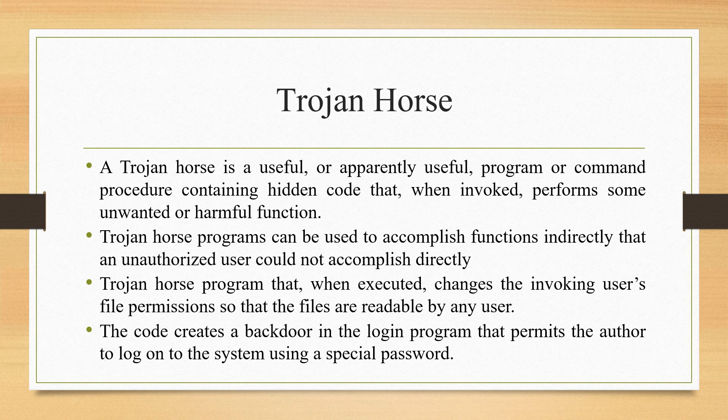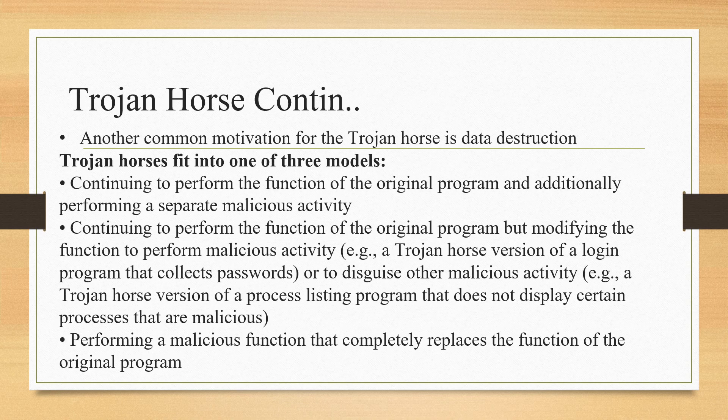The code creates a backdoor in the login program that permits the author to log on to the system using a special password. A Trojan horse can modify the function to perform malicious duties — for example, it can collect user credentials like login and password, or disguise other malicious activity, such as hiding certain processes. It can also completely replace the function of the original program with a malicious function.